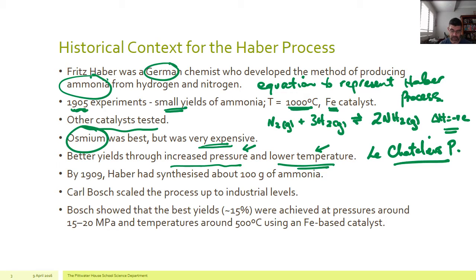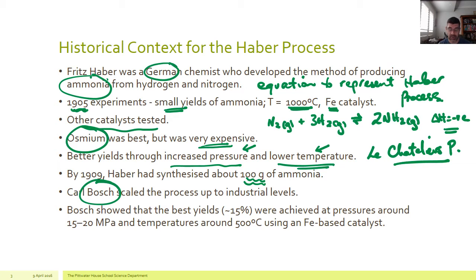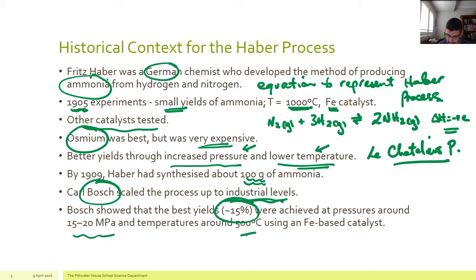A couple of years later, Haber had successfully managed to synthesize around 100 grams of ammonia. That's not a huge amount, but it's certainly a starting point to show you're producing something of commercial value. It wasn't actually Haber but Carl Bosch — familiar from industrial manufacture — who used Haber's process to scale it up to industrially valuable quantities. Bosch showed that to get the best yields, around 15%, you need 15 to 20 megapascals of pressure and around 400 to 500 degrees Celsius with the iron catalyst.